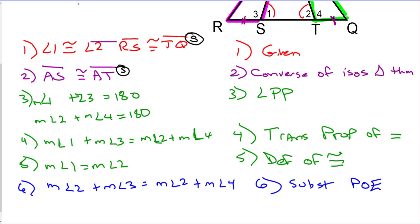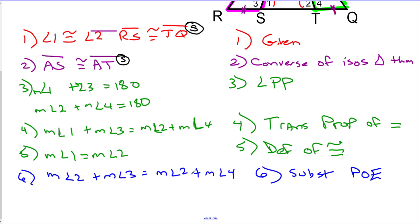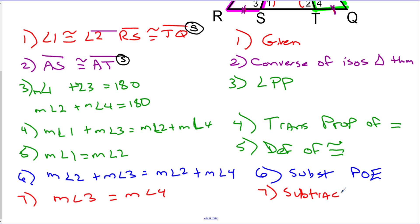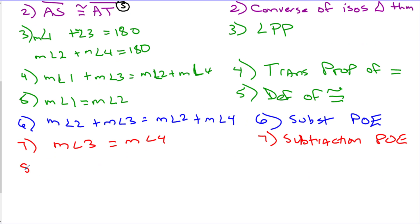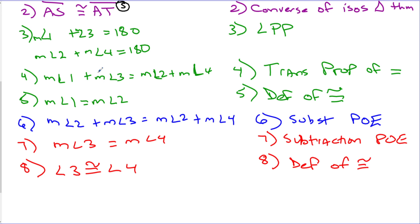Now we're almost done. I have a measure of angle 2 on both the left and right side. The subtraction property says if you subtract the same thing from both sides, that's allowed. Step 7: I subtract angle 2 from both sides and get the measure of angle 3 equals the measure of angle 4, using the subtraction property of equality. And now I'm going to turn this back into a congruent statement.